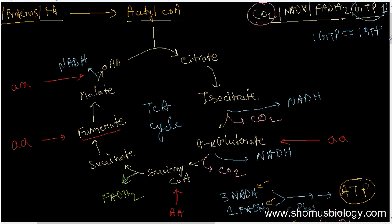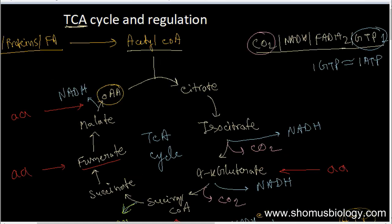Oxaloacetate is critically important. It can exit the TCA cycle and be used to produce glucose via gluconeogenesis. For example, if the brain is deprived of glucose, oxaloacetate can shift away from the TCA cycle to gluconeogenesis to supply glucose. This illustrates how interconnected metabolic pathways are — the more you learn, the more fascinating these connections become.